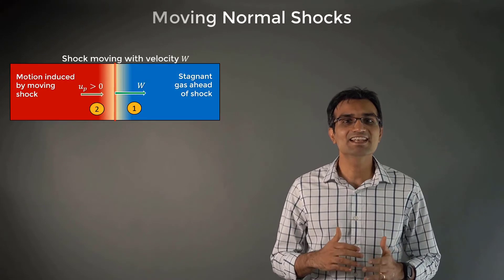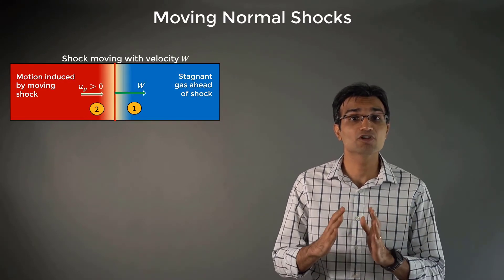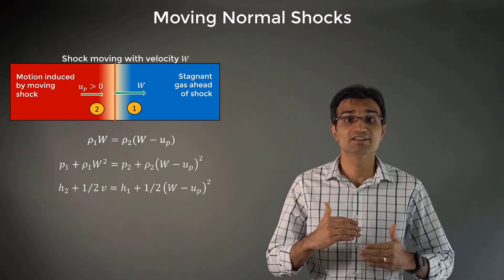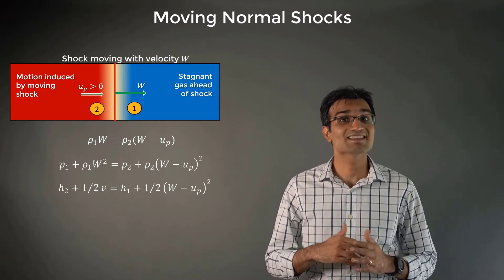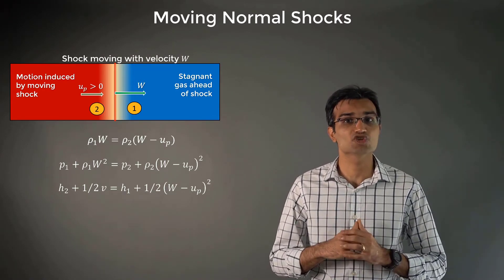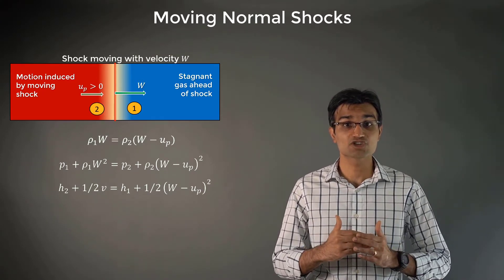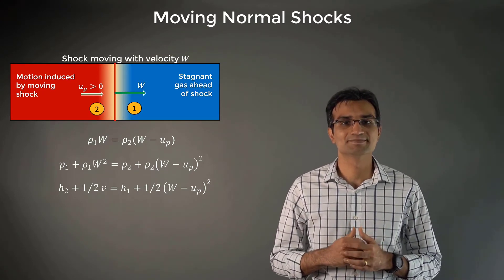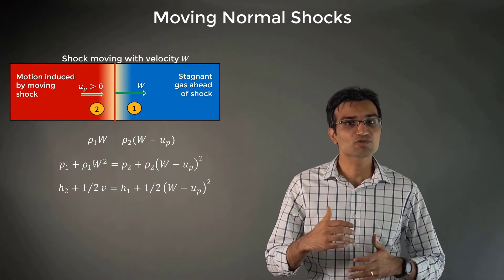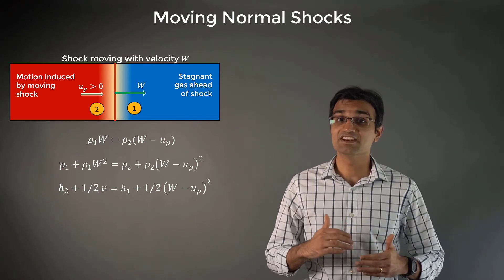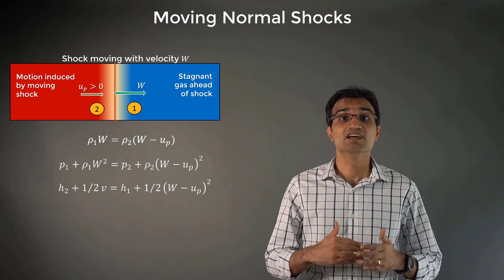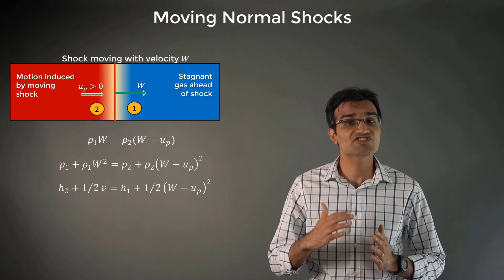Let's take a look at moving normal shocks. We can readily derive the governing equations of a moving normal shock by noting that W is the velocity of the gas ahead of the shock relative to the shock, and W minus UP is the velocity of the gas behind the shock relative to the shock. Using these transformation equations, we can rewrite the jump relations previously developed for stationary shocks.